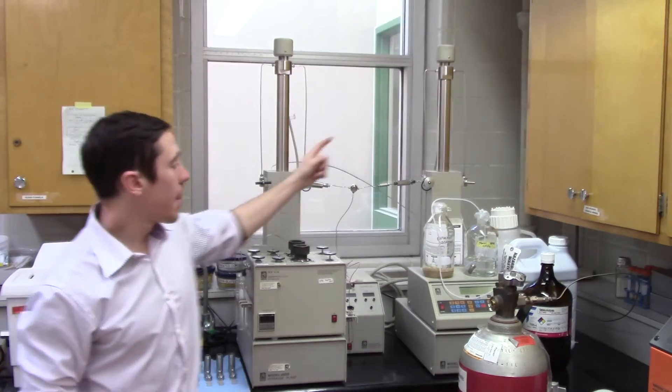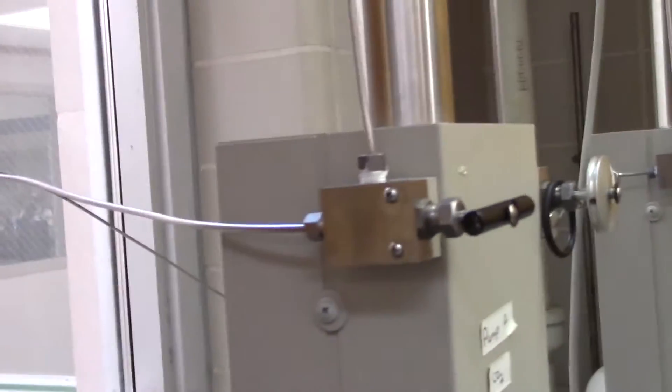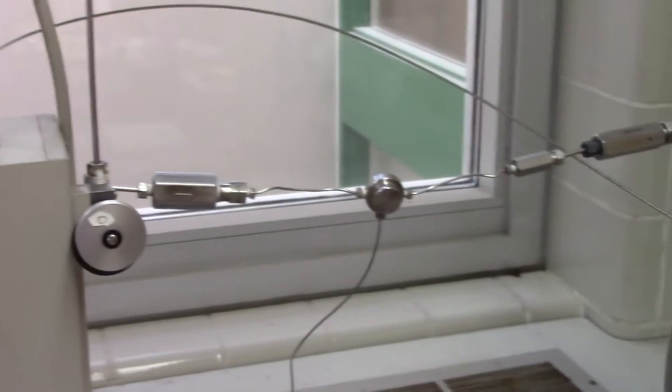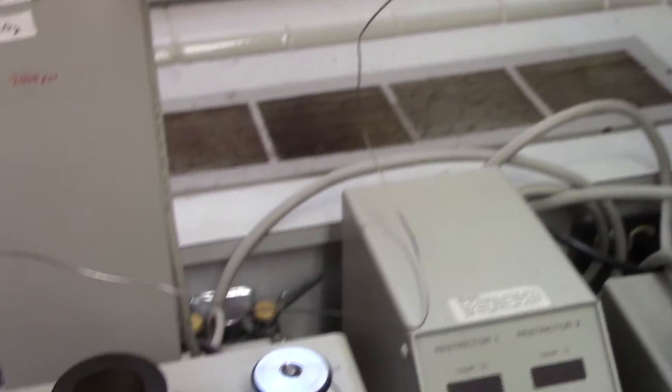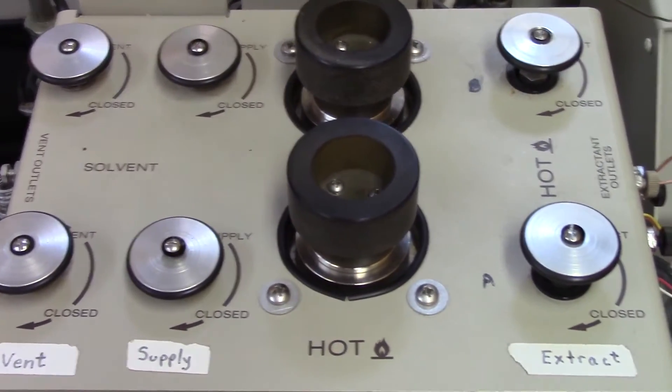This extraction unit has two pumps, pump A and pump B. The CO2 cylinder is connected to the back side of pump A. Liquid CO2 is pressurized to the supercritical state in pump A. The CO2 travels to the extraction chamber where it flows through the product being extracted and out through the restrictor tubing into a test tube.